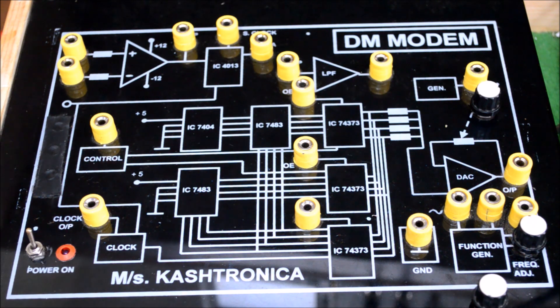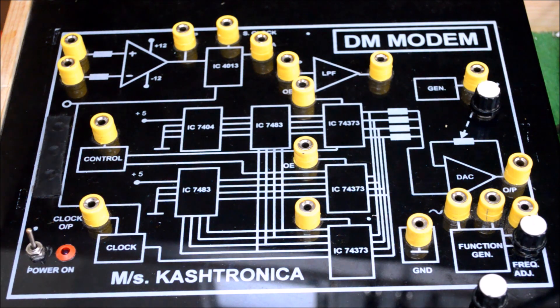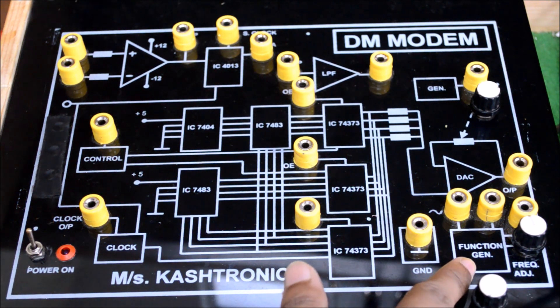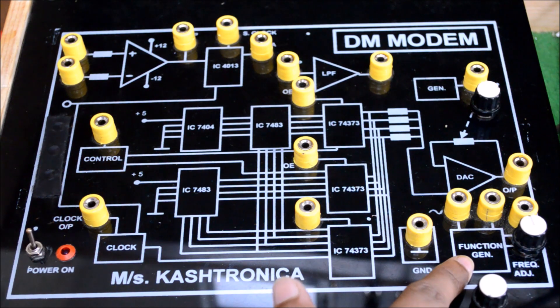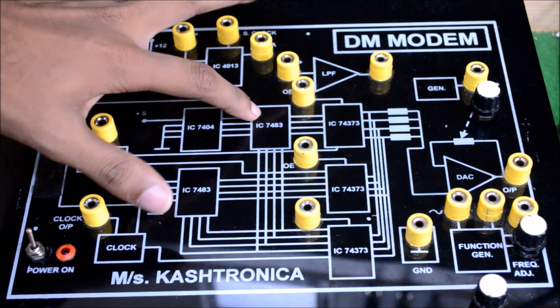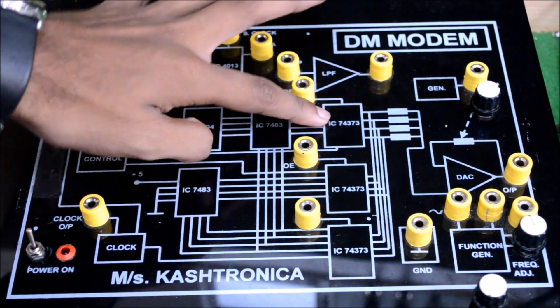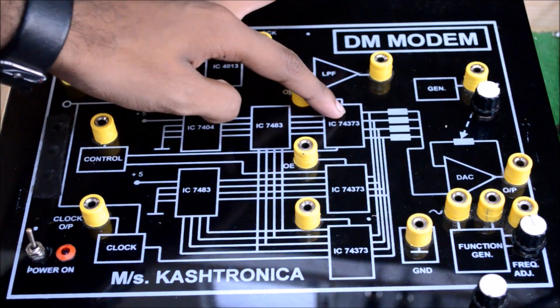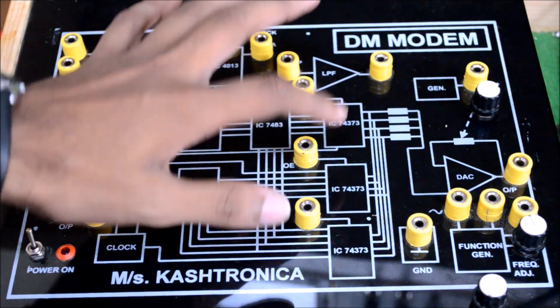DM employs this predictability in simple hardware. On the Castronica kit we have a function generator based on IC 8038. The receiver consists of IC 7401 which is a NOT gate, IC 7483 adder, and IC 74373 that is used for latching of the output.